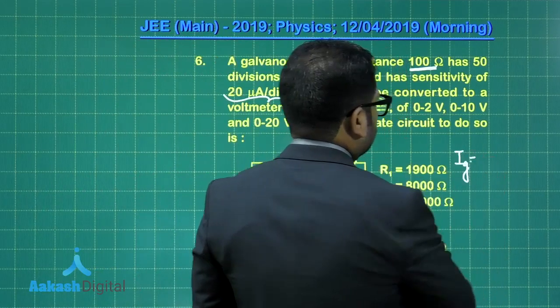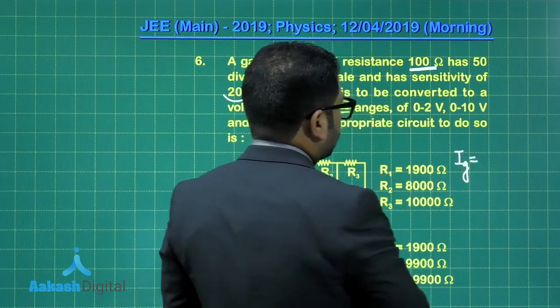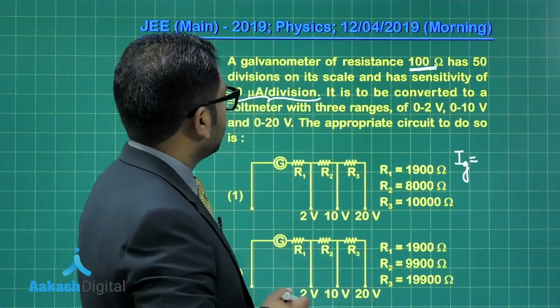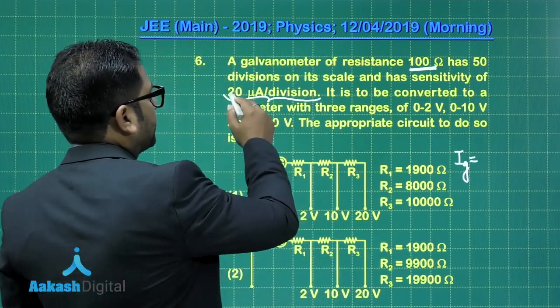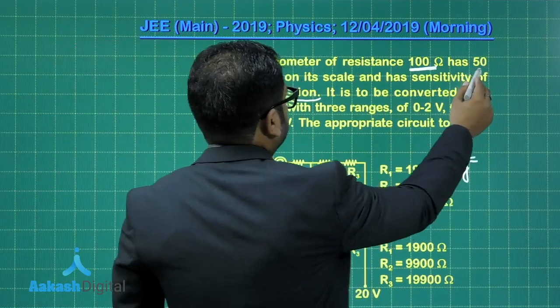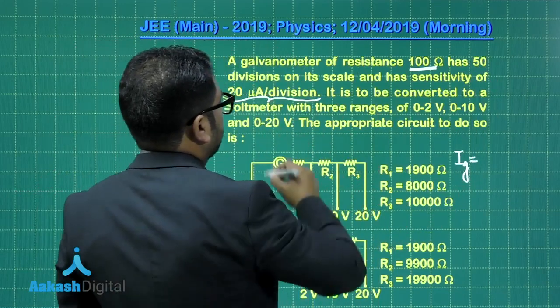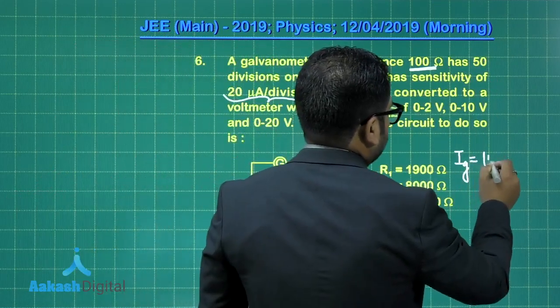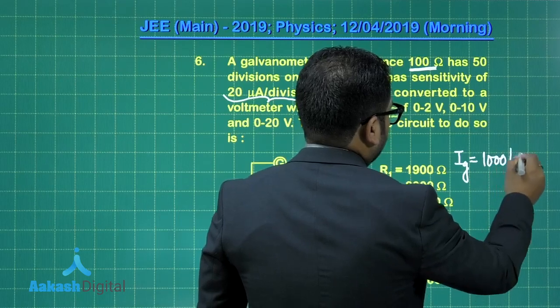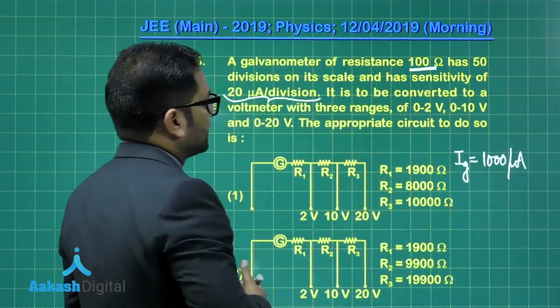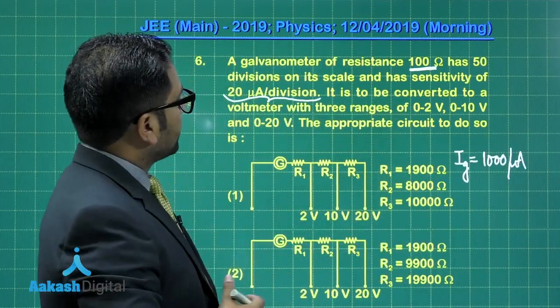If I denote it by IG, the current required for full scale deflection, and that's quite simple. See, 20 multiplied by 50 because this many divisions and this is the micro ampere per division. So that's 1000 micro ampere. You can convert it into ampere.